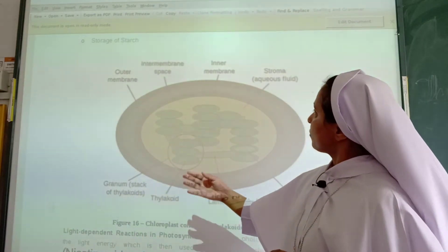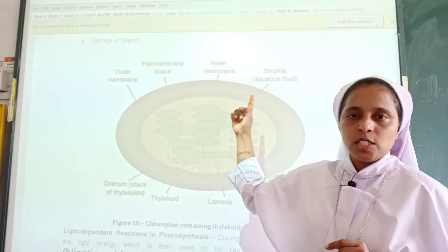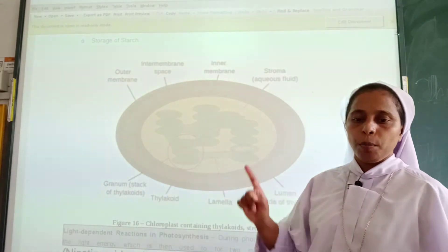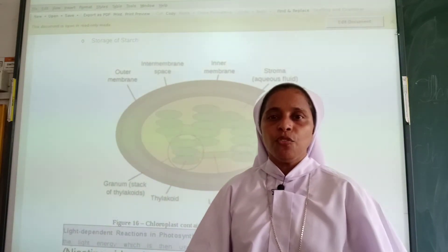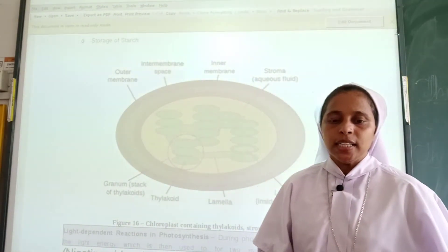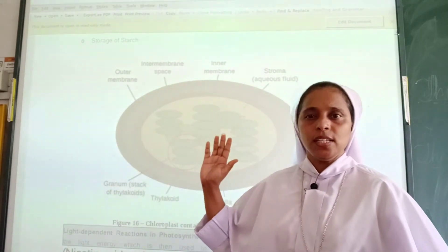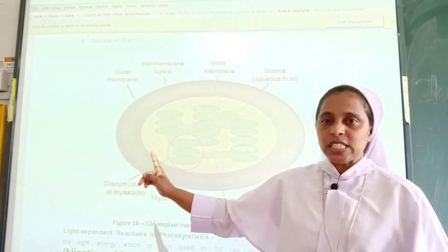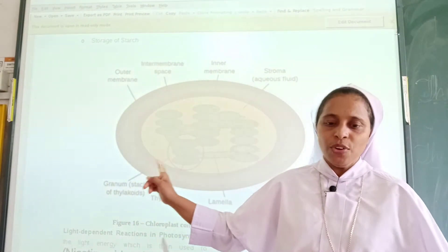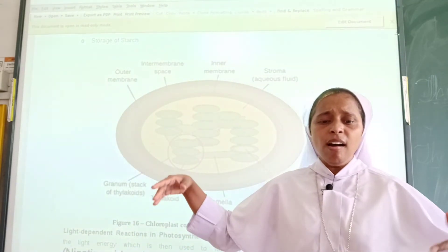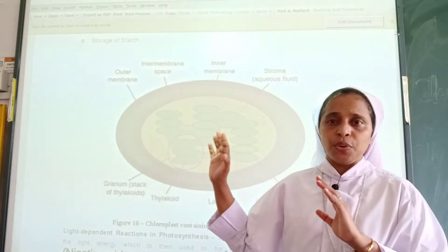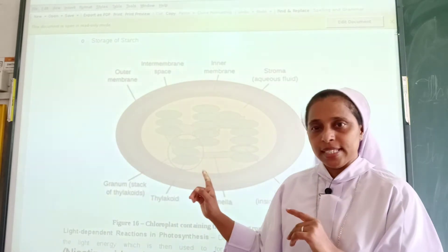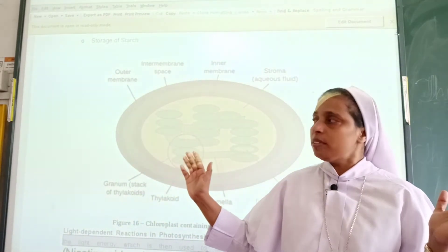Next, we have the stroma — a fluid-filled matrix in the chloroplast. It is a colorless fluid that contains all the enzymes needed for the light-dependent reactions in photosynthesis. Then there is grana, which are stacks of thylakoids found in the stroma. Grana provide a large surface area so that the reactions required for photosynthesis can take place. So we have discussed thylakoids, stroma, and grana in chloroplast.